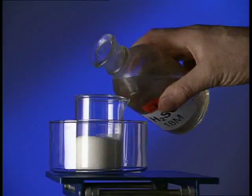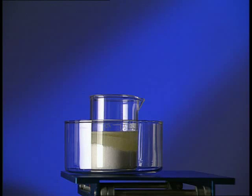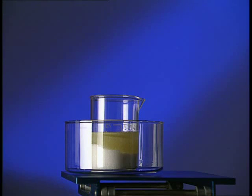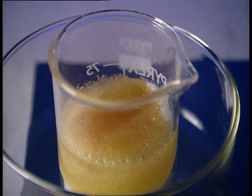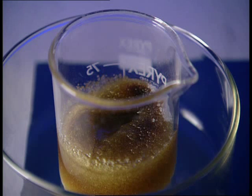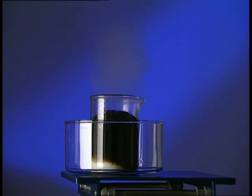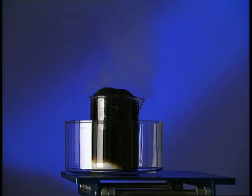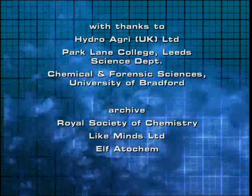Sulphuric acid has many uses in industry. An important property is its ability to absorb water. Here, concentrated sulphuric acid is added to ordinary sugar. The acid acts as a dehydrating agent. It removes water from the sugar molecules, leaving only carbon behind. The water escapes as steam.